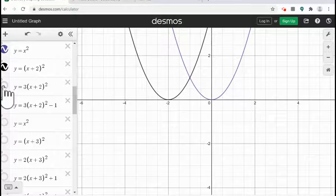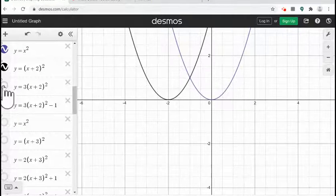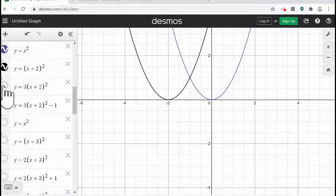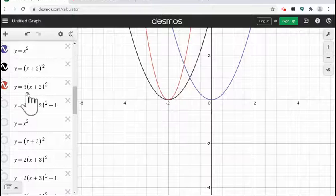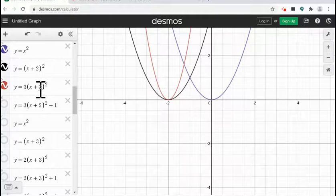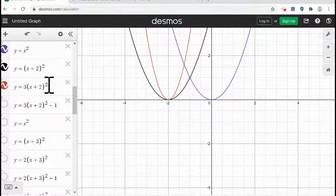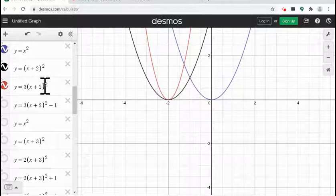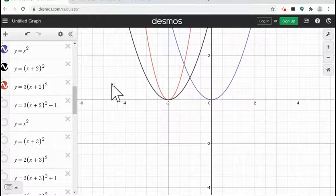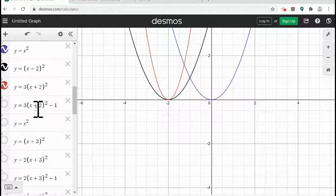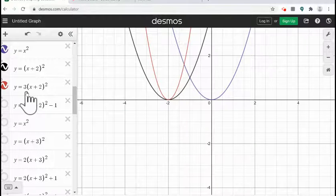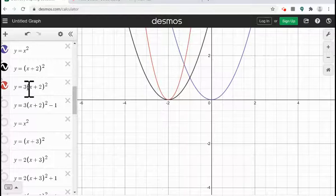And then to reach my function I'm doing second step which is I am multiplying by 3, so it is 3 multiply in parentheses x plus 2 to the square. So I get vertical stretch as you can see in the red function here because of multiplication of 3.